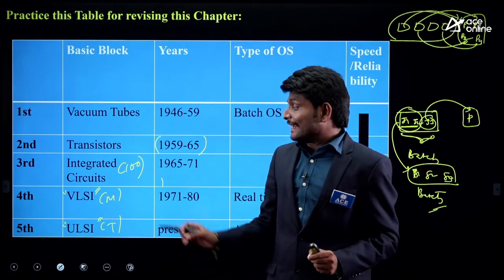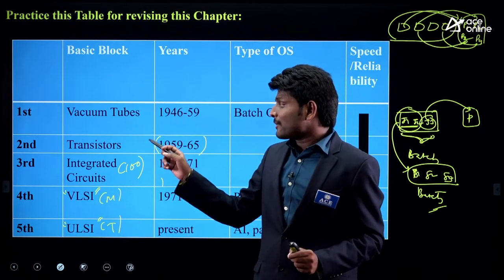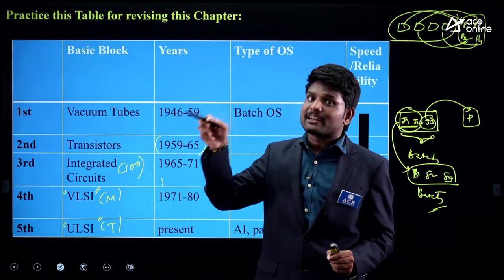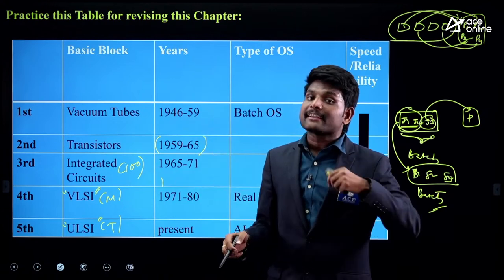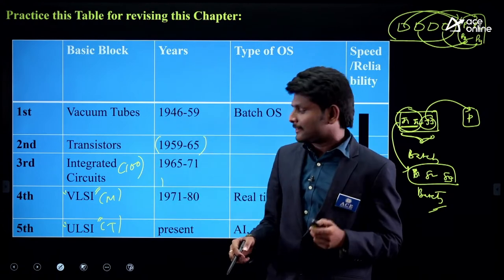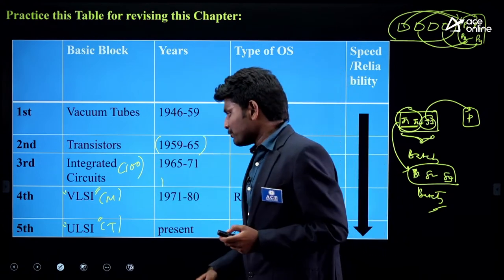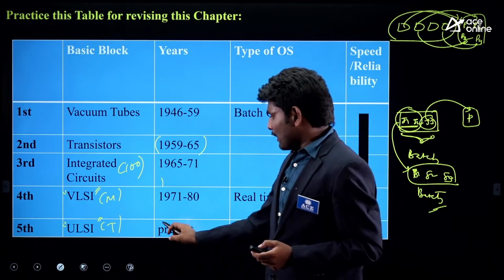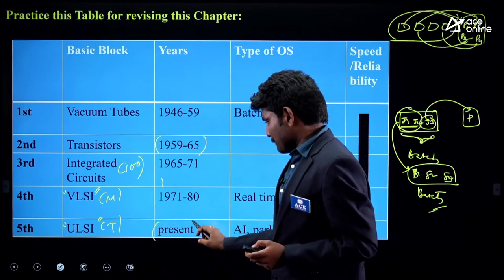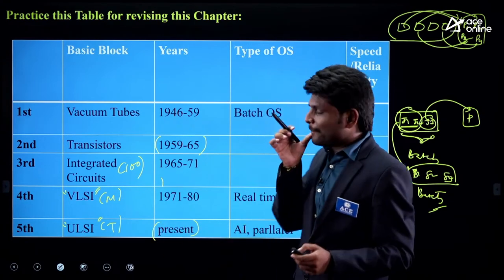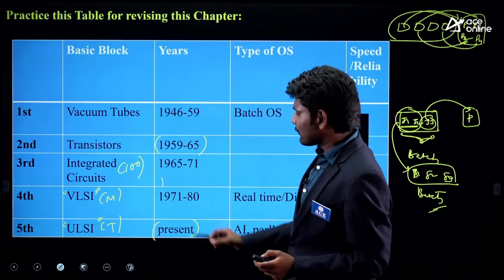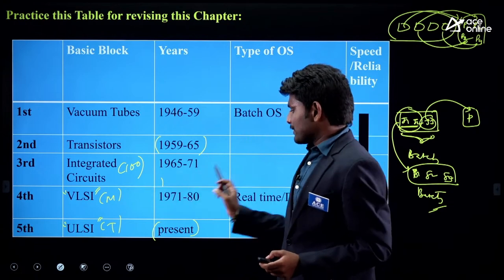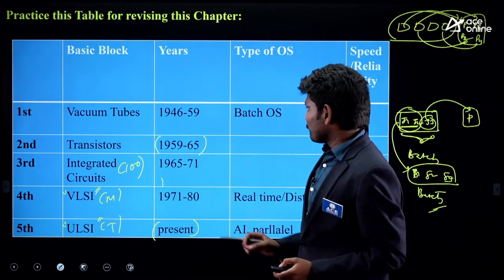The advantage: by increasing the number of integrated circuits placed on a chip, they increase computing power. The 5th generation computers are currently being developed; before that, 4th generation computers were in use.